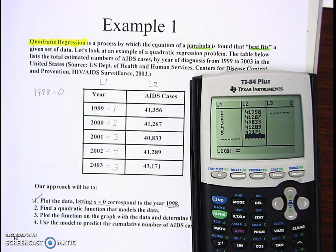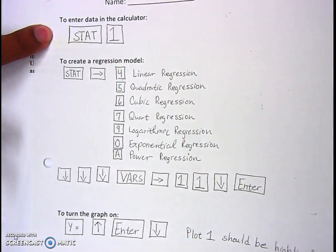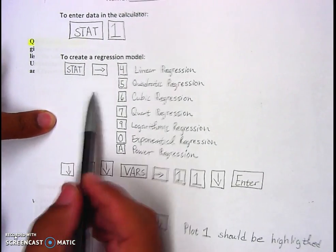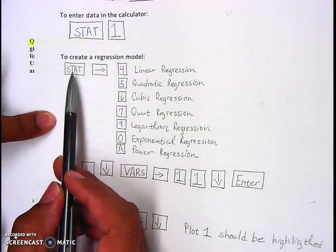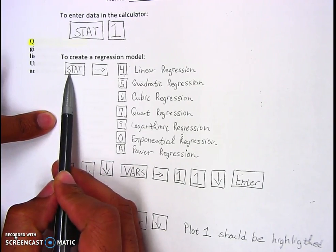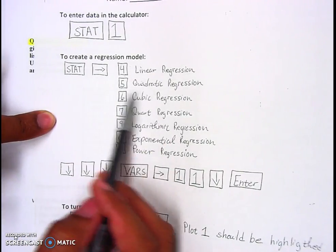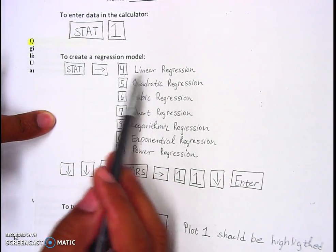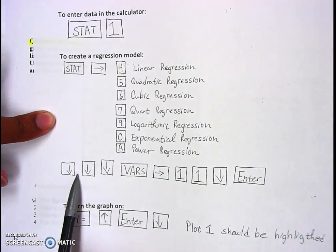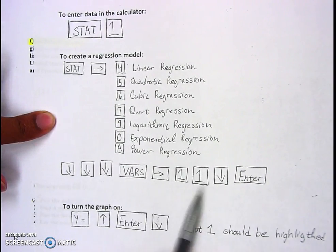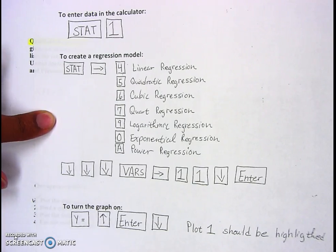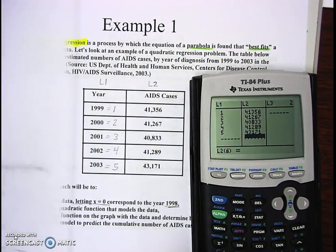Number two says we're going to find the quadratic function model or the regression model. We already did number one, so now we're jumping down here. We're doing quadratic regression, so we hit the STAT button, go to the right, and hit number five because we're doing quadratic regression. We're going to follow these exactly as it is on the calculator.